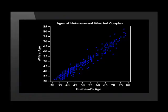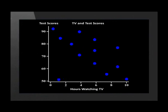Once the points are plotted, we will see a general trend in the data and be able to analyze the relationship. This relationship is called a correlation. This scatter plot shows a comparison of the ages of the husband and wife in heterosexual married couples. Can you see the trend in the data? As the husband's ages increase, so do the wives'. This is a good example of a positive correlation. This diagram shows a negative correlation between the number of hours spent watching TV and test scores. This means that as a child watched more TV, their scores decreased. Can you see how the points show a trend of going down?